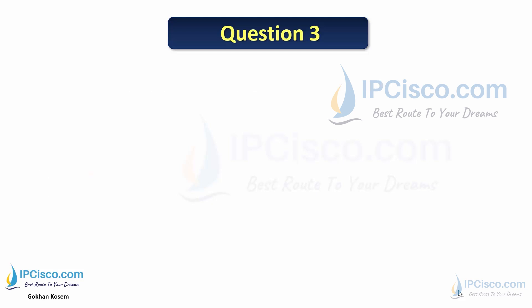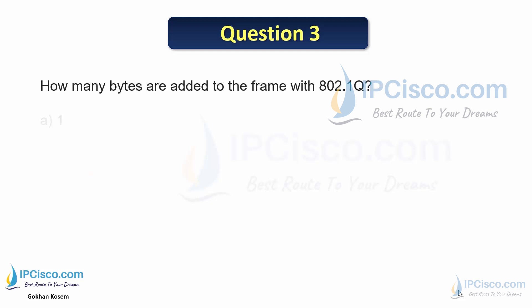Question 3: How many bytes are added to a frame with 802.1Q — 1, 2, 4, 8, or 16? The answer is C, 4 bytes.